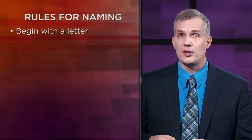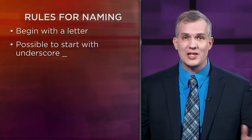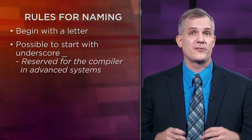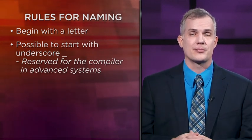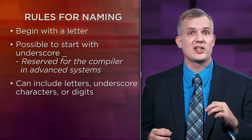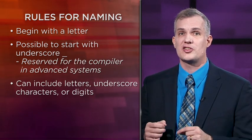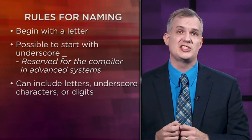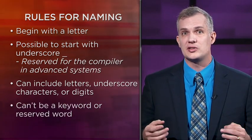Names have to begin with a letter. It's also possible to start with an underscore character, but you should not do that — variables starting with underscore are usually reserved for special things in the compiler. As for the rest of the name, you can use letters, underscore characters, or numbers, but names can't start with digits. There are also a few dozen special keywords or reserved words in C++ that you can't use as variable names, such as namespace or using.